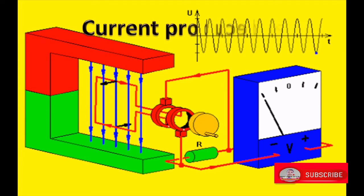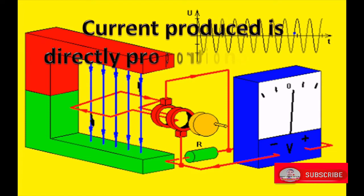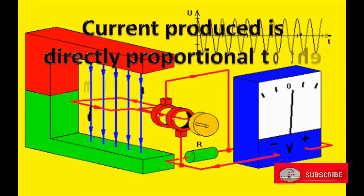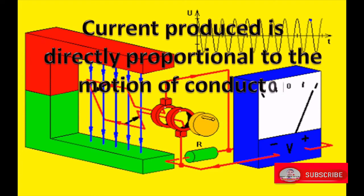Current produced is directly proportional to the motion of conductor or magnetic flux.